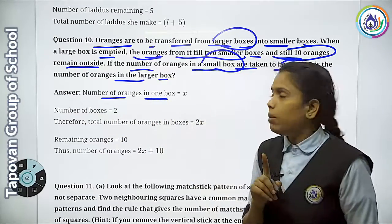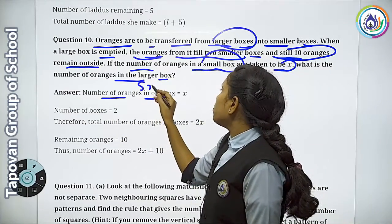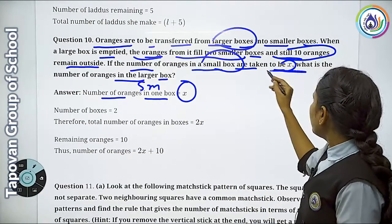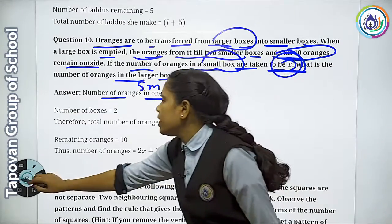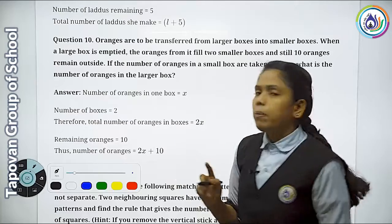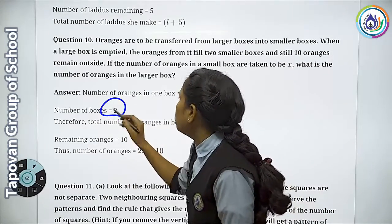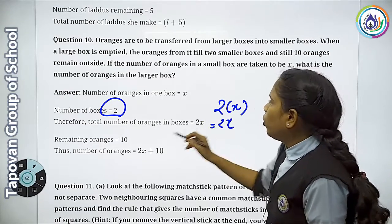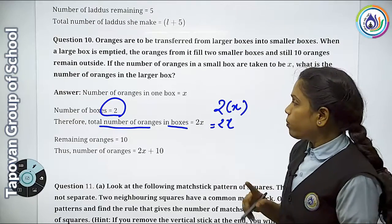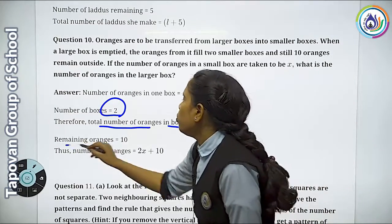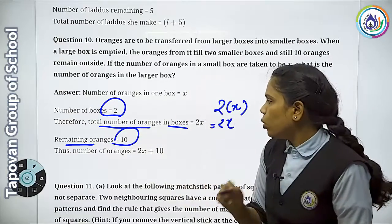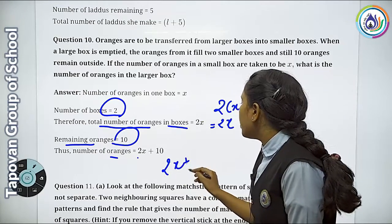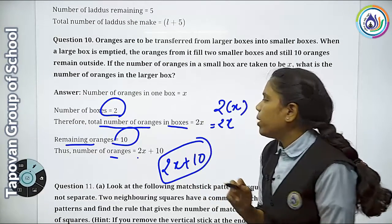Number of oranges in one small box = x. The number of small boxes is 2. So 2 × x = 2x. Total number of oranges in small boxes = 2x. Remaining oranges = 10. So total number of oranges = 2x + 10. Answer: 2x + 10 oranges.